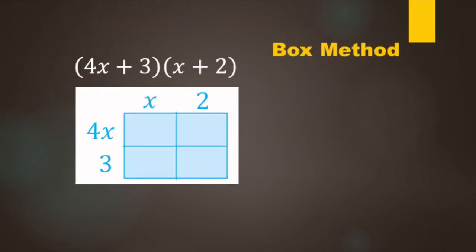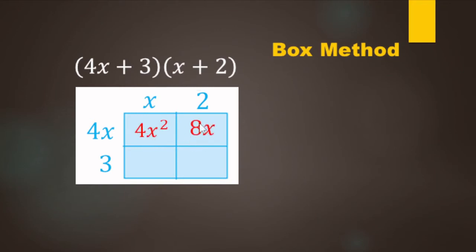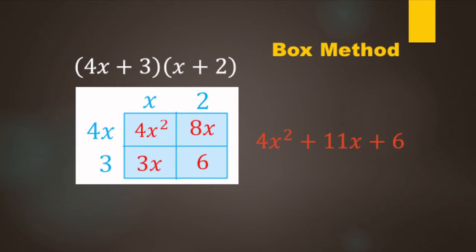Now I want to introduce the box method — if you're looking up other YouTube videos you might find this. So just going to introduce it so you understand what's going on. Using the last example (4x + 3)(x + 2): put 4x and 3 along the top, and x and 2 along the side. This is just a multiplication table. The top-left box is x times 4x, the bottom-left is 2 times 4x, the top-right is x times 3, and the bottom-right is 3 times 2, which makes 6. Adding like terms gives 4x squared, then 11x, then 6.